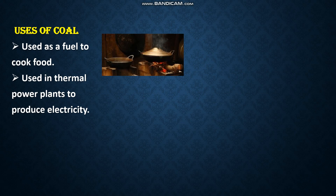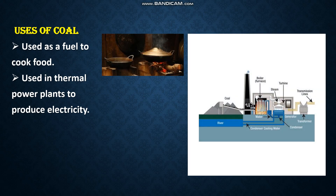When water is boiled, steam is produced. The steam drives the turbine. The turbine is connected to a generator which converts mechanical energy into electrical energy. Coal is used in thermal power plants — when coal is burned, a lot of heat is produced, and that heat is used to boil the water. So coal is the fuel used in the thermal power plant.